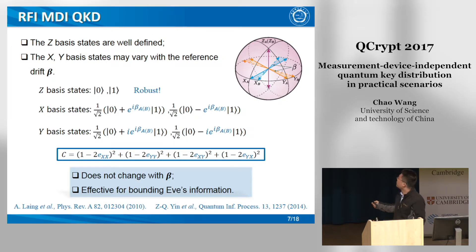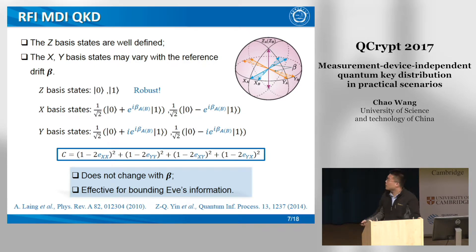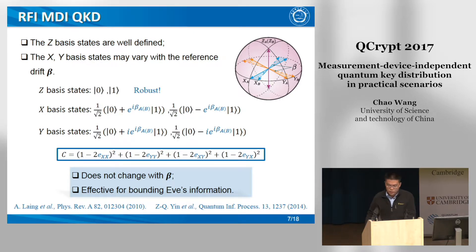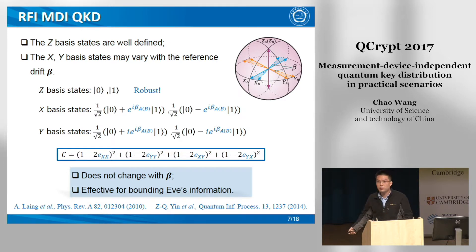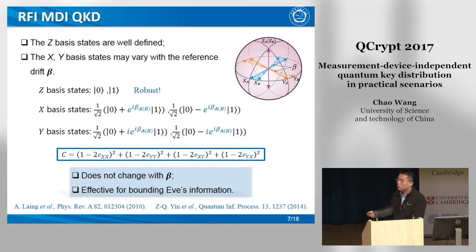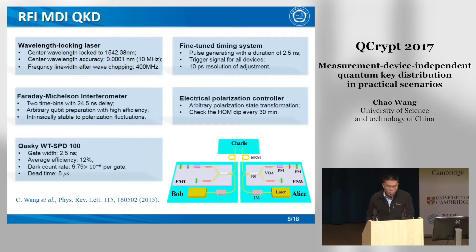The reference frame-independent protocol is then proposed to solve the calibration problem. In this protocol, the Z-basis states are well-defined and won't change with time, while the X-basis states and Y-basis states may vary with reference drift. Both the X-basis states and the additional Y-basis states are utilized to compensate the reference drift as well as the system's deviation. The Z-value, which is directly related to the X-basis and Y-basis results, will not change with the drift angle theoretically, and can be used to estimate the eavesdropper's information as well as the final secret key rates.